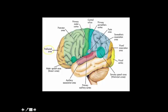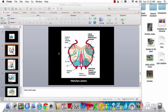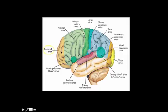Moving on to the cortex, there are some specific areas to note. In the prefrontal cortex, a lesion or stroke will basically cause personality change, as this is the thinking area. Broca's area is the motor speech area — if there is a lesion here the patient will have expressive aphasia and won't be able to say much. A problem in the auditory cortex will cause hearing problems and can also give rise to auditory hallucinations.